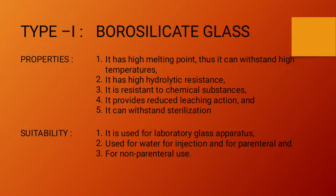Starting with type 1. Type 1 is borosilicate glass. Borosilicate glass has high melting point and thus it can withstand a higher temperature. It has high hydrolytic resistance and it is also resistant to chemical substances. It also provides reduced leaching action and can withstand sterilization.